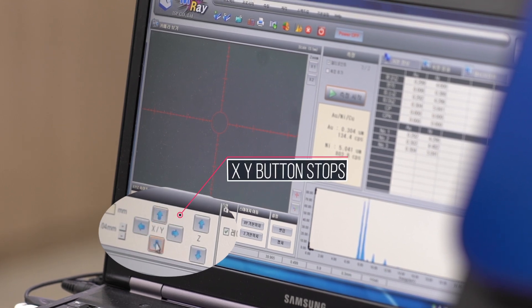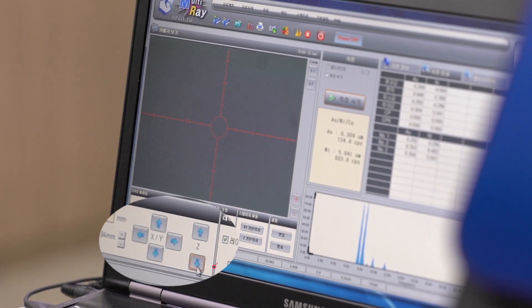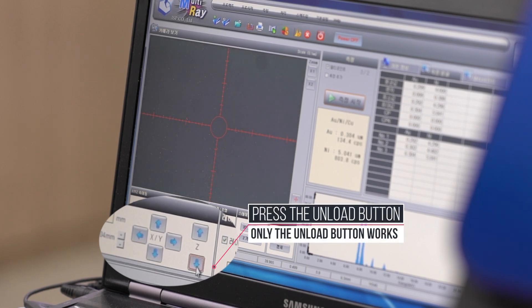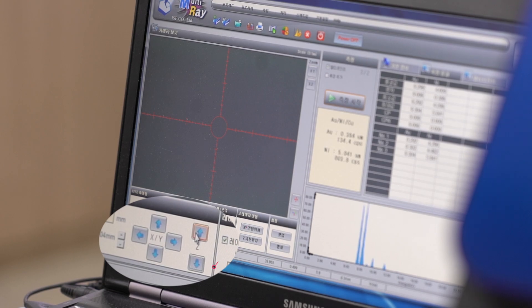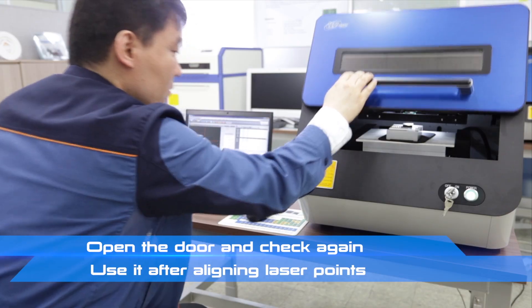If the sample is interrupted, the buttons will stop. Only the down button will work. After lowering the stage, open the door and check with your eyes.